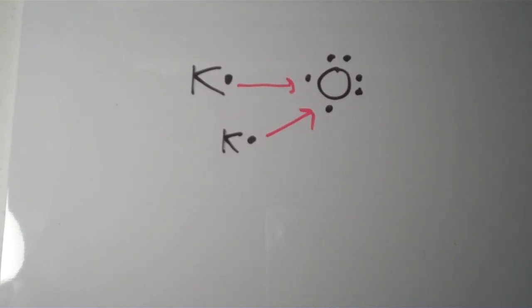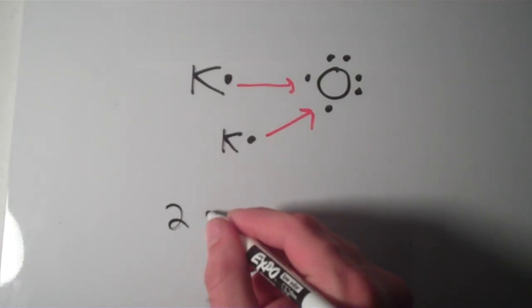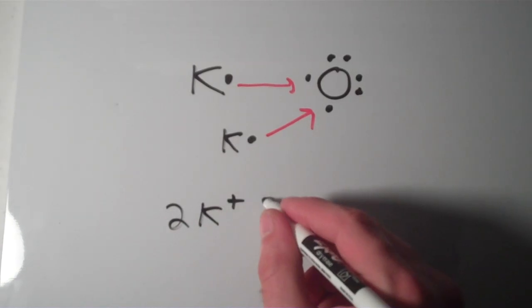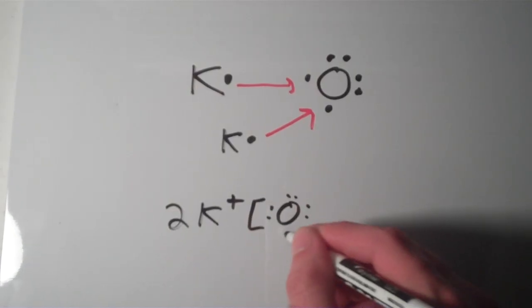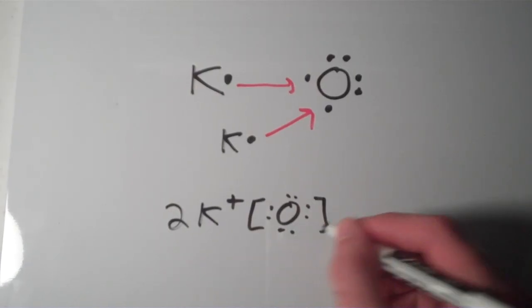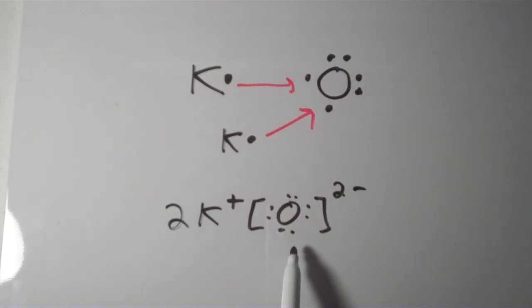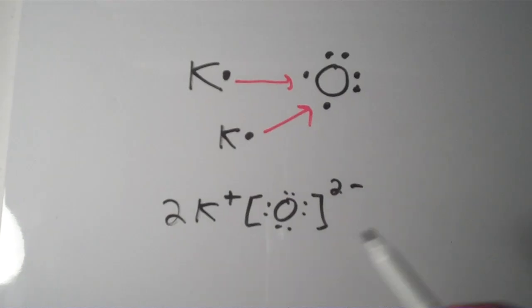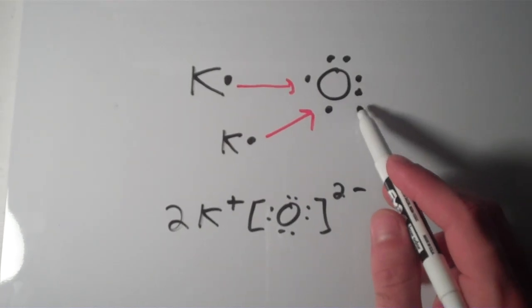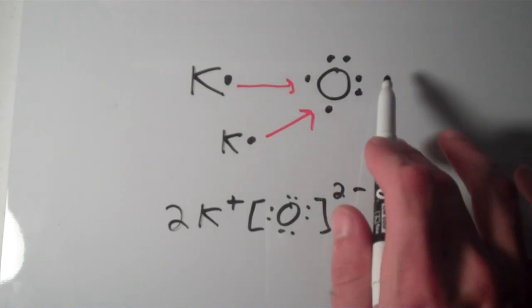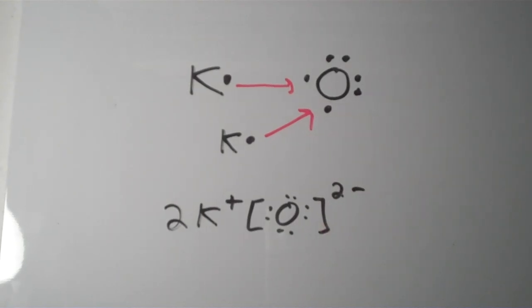In order to satisfy both atoms, giving an octet for both. So, in this case, we actually have 2 potassium ions, so 2K+, and then our anion in brackets, O, 8 valence electrons, and this is a 2-, because the oxide ion has 2 more electrons than it did when it was just the oxygen atom. Remember, electrons are negatively charged, so when we add them, we're actually decreasing the charge of this. It's becoming more negative.